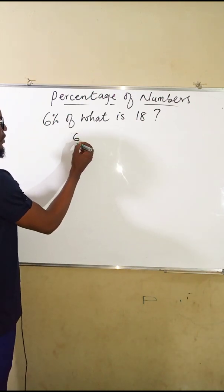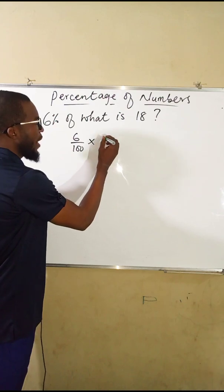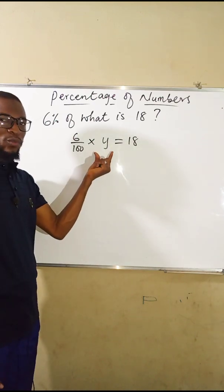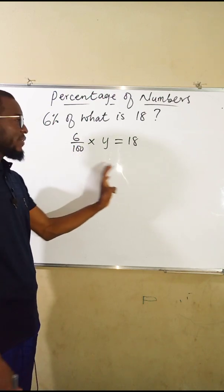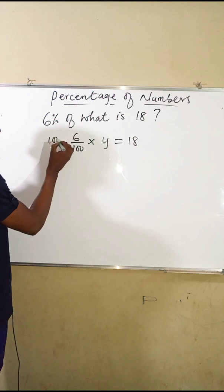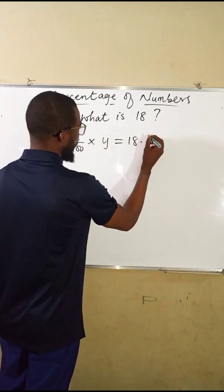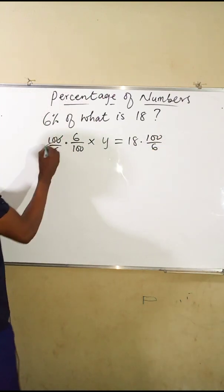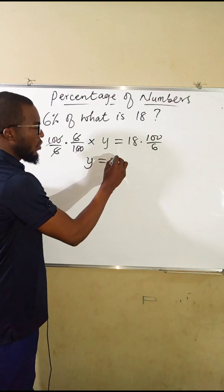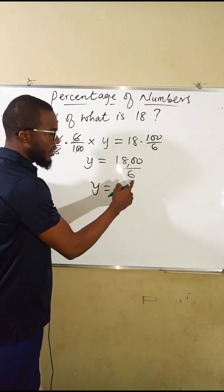Six percent can be written as 6 over 100, and 'of' means multiplication. The unknown number is represented by Y, so we have: 6 over 100 times Y equals 18. To find Y, we multiply both sides of the equation by the reciprocal of 6 over 100, which is 100 over 6. This cancels the fraction on the left, leaving only Y. On the right: 18 times 100 is 1800, divided by 6, giving Y equals 300.